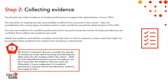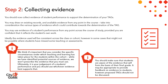It's important that you consider the specific circumstances under which teaching and learning has taken place for the students within the cohort. While we have identified some potential sources of evidence, we won't prescribe the evidence that you must use — ultimately, it's your judgement of a student's performance and you should use whichever evidence supports that. You should make sure that students are aware of the evidence that will form the basis of their final grade. It may be appropriate to provide feedback on evidence to the students; however, proposed TAGs should not be discussed.